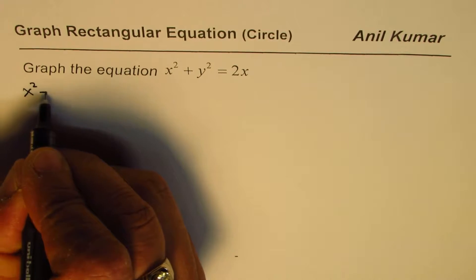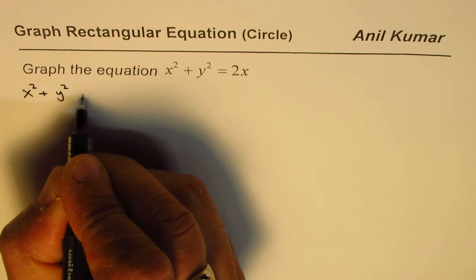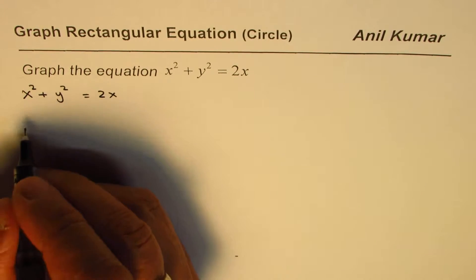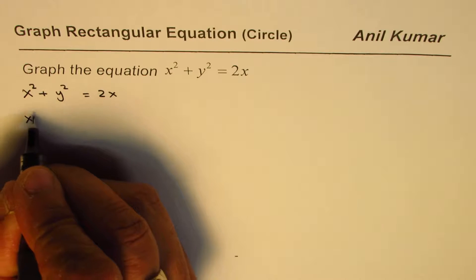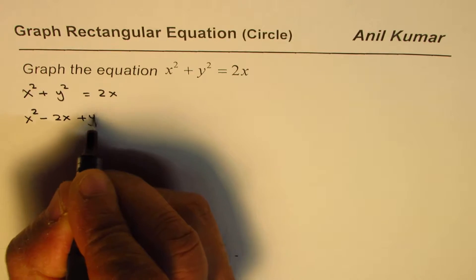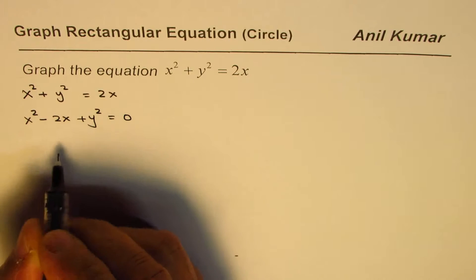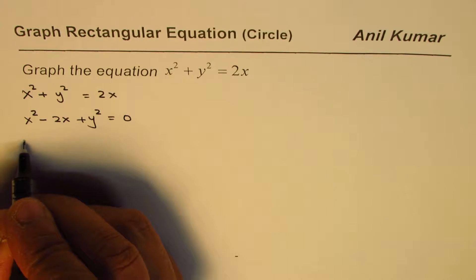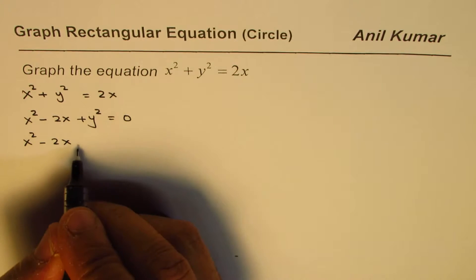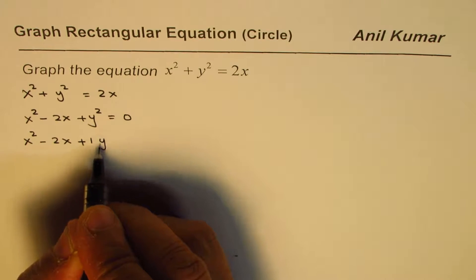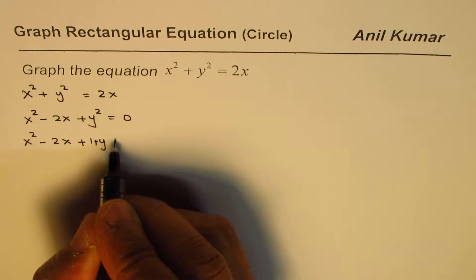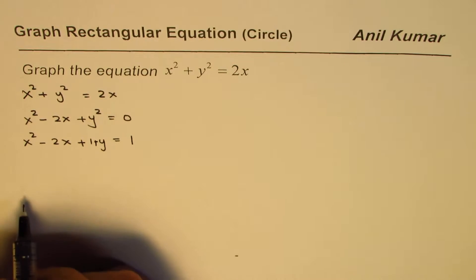We have the equation x squared plus y squared equals 2x. We can bring x to the left side, so we get x squared minus 2x plus y squared equals 0. Now we can complete the square. For x squared minus 2x, half of 2 is 1, so we will add 1 on both sides.